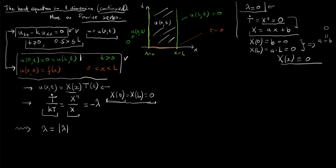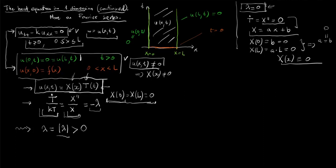We excluded such trivial functions from our solutions. So if we want u(x,t) to be non-zero, then X(x) is not zero, and therefore solutions for lambda equals zero are not interesting. An assumption about this product form of a solution means that X and T should satisfy these two ODEs with a constant lambda, which is a non-negative real number. Even more, from the boundary conditions, we can show there are solutions parametrized by an integer n.